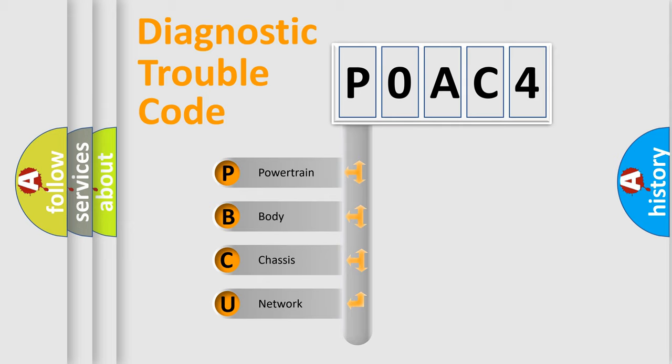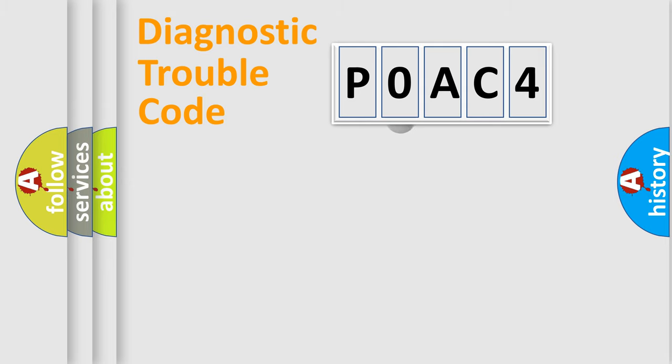We divide the electrical system of automobiles into four basic units: Powertrain, Body, Chassis, and Network. This distribution is defined in the first character code.